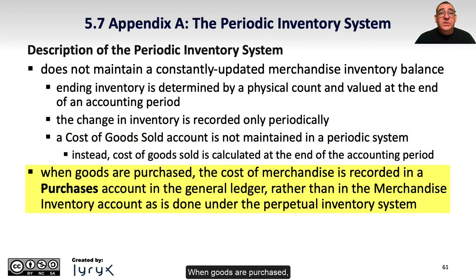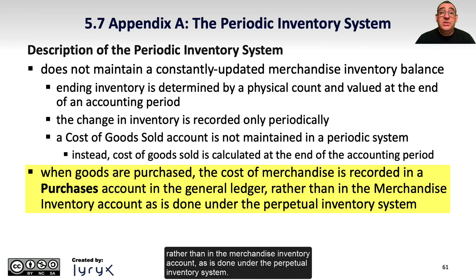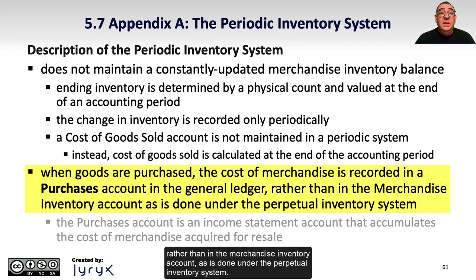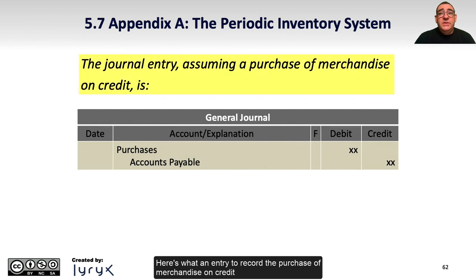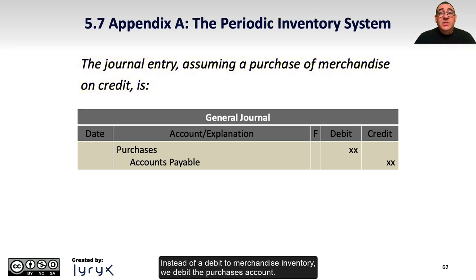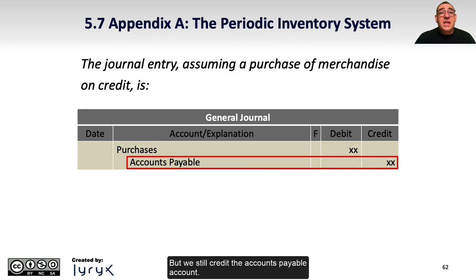When goods are purchased, the cost of merchandise is recorded in a purchases account in the general ledger rather than in the merchandise inventory account, as is done under the perpetual inventory system. The purchases account is an income statement account that accumulates the cost of merchandise acquired for resale. An entry to record the purchase of merchandise on credit under a periodic inventory system would include a debit to the purchases account and a credit to the accounts payable account.